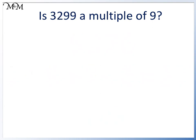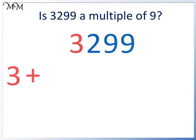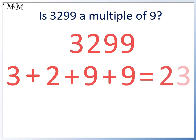Is 3,299 a multiple of 9? We add 3 plus 2 plus 9 plus 9 equals 23. 23 is not a multiple of 9, so no, 3,299 is not a multiple of 9.